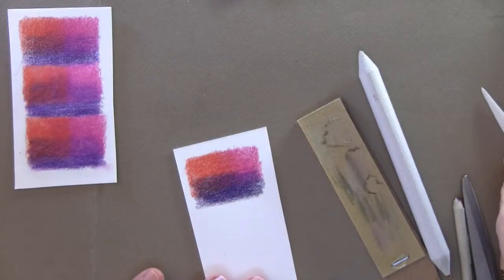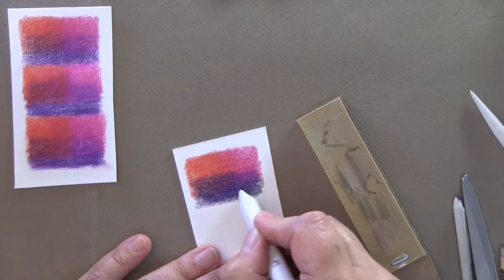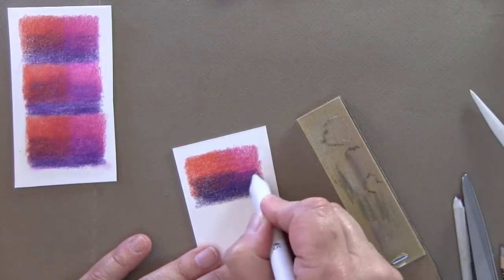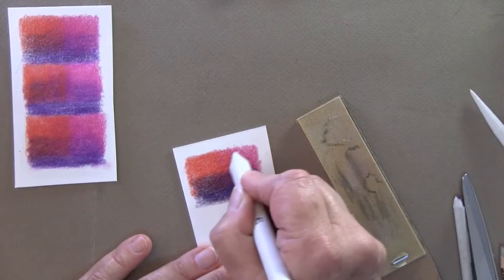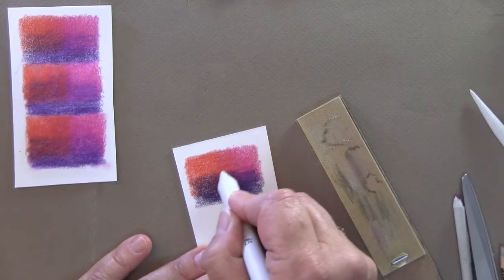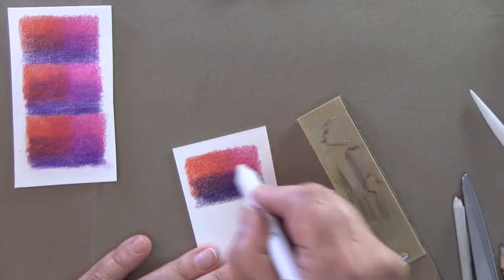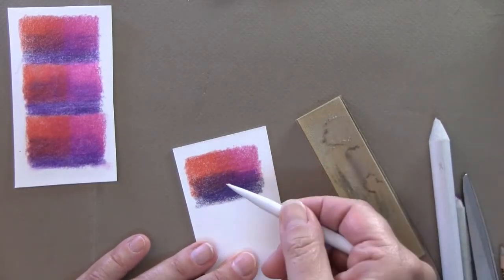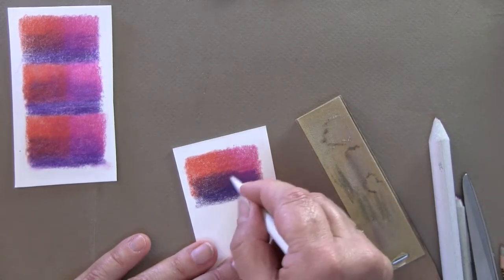Now for the paper stump and the tortillon, you have to have quite a few layers on before you do these, otherwise it really won't work. And you can see I've got two, I'm doing okay here. The tortillon just has a finer tip and nothing on the other side, so they're very similar.